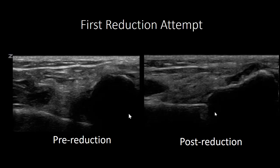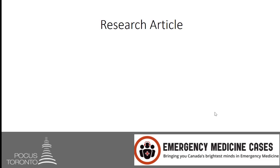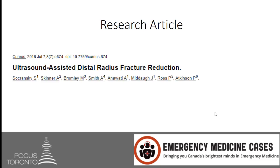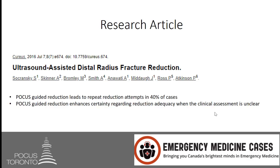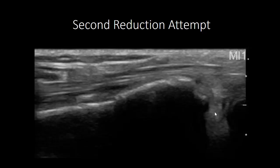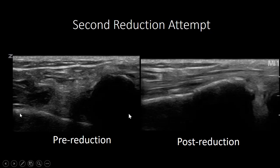Before putting the cast on, a second reduction attempt was made. This article showed that when using ultrasound to assist distal radius fracture reductions, in about 40% of cases you'll need another reduction attempt, and POCUS-guided reductions enhance certainty regarding reduction adequacy when the clinical assessment is unclear. On our second reduction attempt, the distal fragment piece is now more in line, with only a minimal gap where it attaches to the shaft of the radius — a much better result.